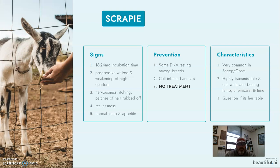Scrapie is highly transmissible and withstands very high temperatures, boiling, chemicals, and time — it takes a lot to get rid of it once you have it. There's some question of its heritability, and as you can see, some breeds are genetically testing for it and culling animals that come up positive or show as carriers of the gene for scrapie. Most importantly, there is no treatment for this one, so culling infected animals is your way to go.